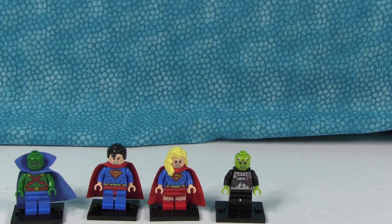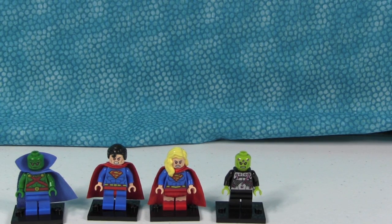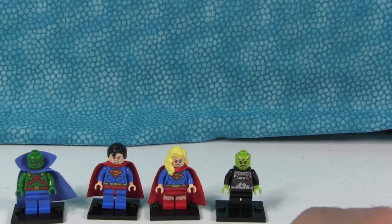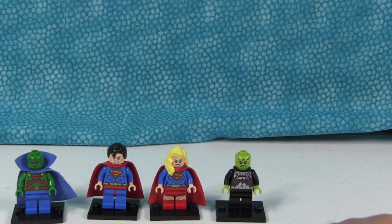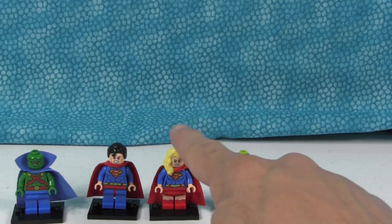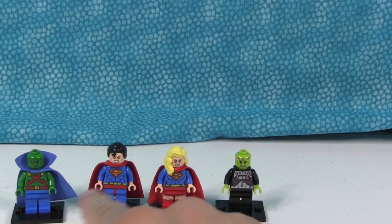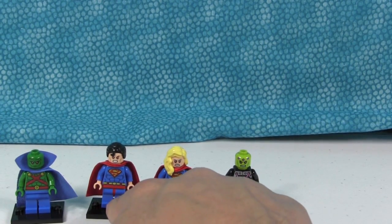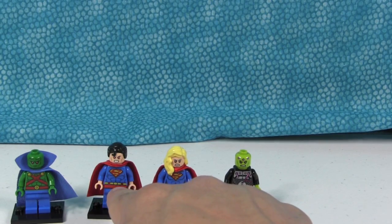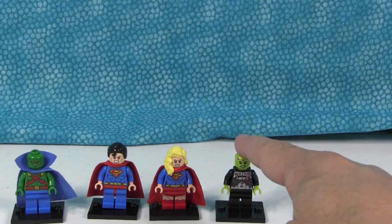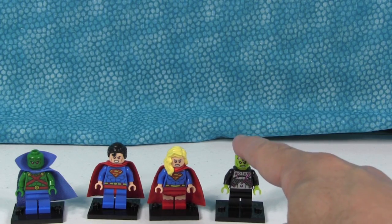Again, that set is 76-040 Brainiac Attacks from the DC Comics Superheroes Lego line for 2015. It's a brand-new set. I like all four of these figures. I think they're all really cool. My favorite figure is going to be the Supergirl. I'm only saying that because I have a Martian Manhunter from last year. I've got this classic Superman look in the Lex Luthor set. Brainiac is really cool. I love having villains. I usually like the villains more than the superheroes.